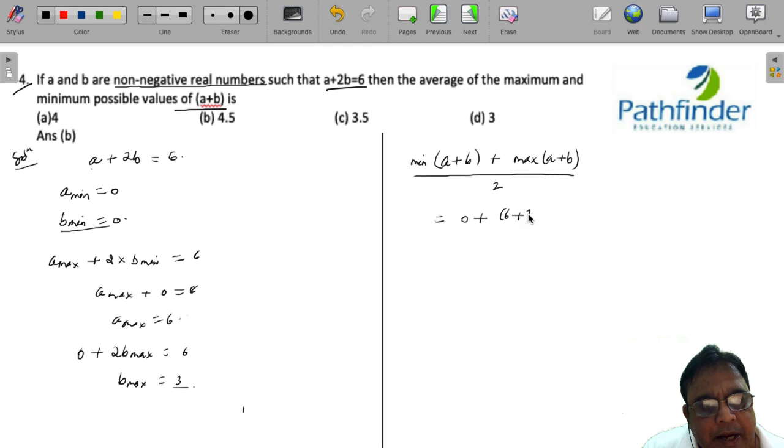Maximum of A and B is 6 plus 3. Whole of this divided by 2 will give me 4.5, which is your answer.